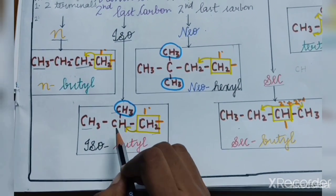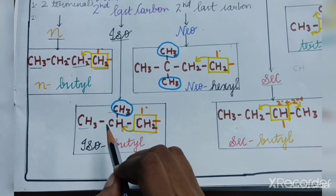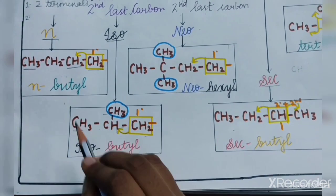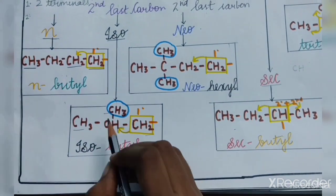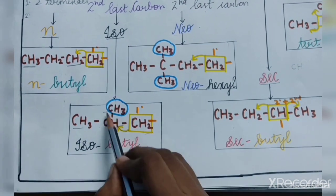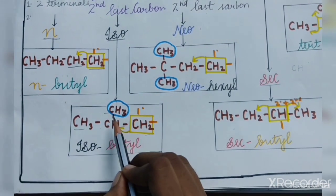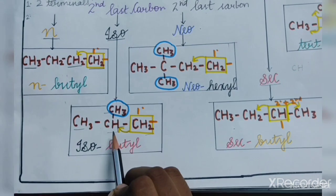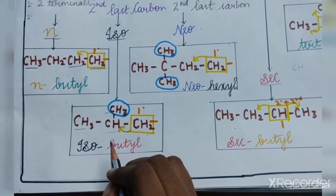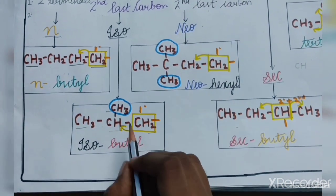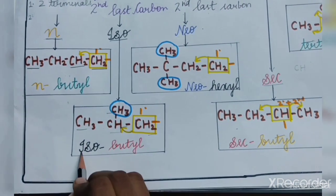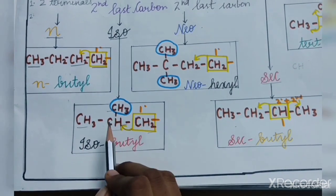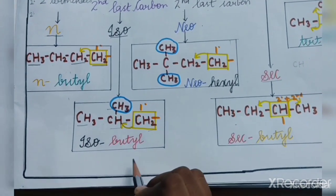We check how many methyl branches are present on the second last carbon. Here, only one methyl branch is present on the second last carbon, so the prefix used is iso. The name of this alkyl is isobutyl.